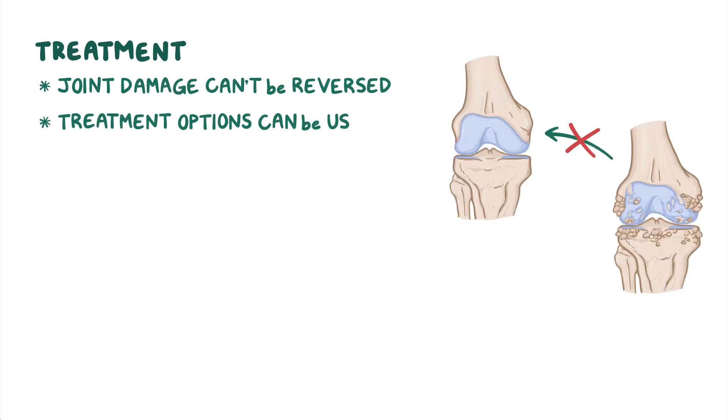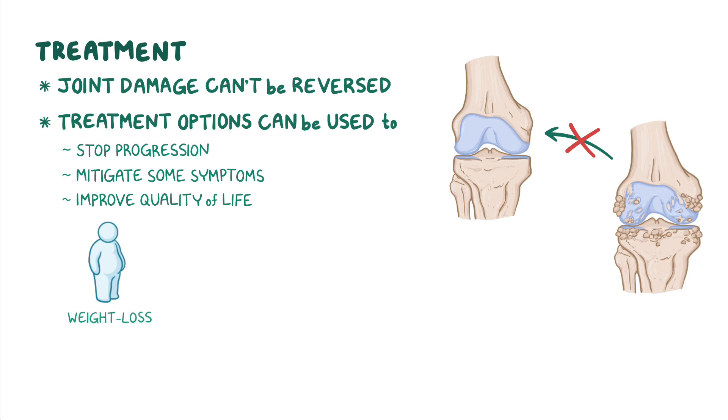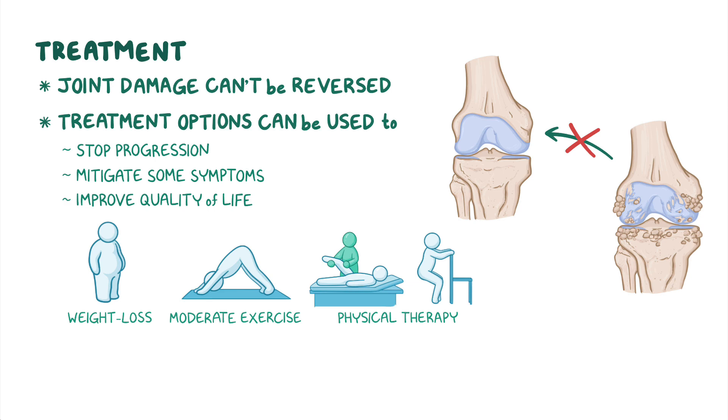Although the joint damage in osteoarthritis can't be reversed, certain treatment options can be used to stop its progression, as well as to help mitigate some of the symptoms and improve the client's quality of life. These treatment options can involve lifestyle modifications, like weight loss, moderate exercise, as well as physical therapy, involving range of motion exercises and local muscle strengthening. This can be especially important when large, weight-bearing joints like the hips and knees are affected.